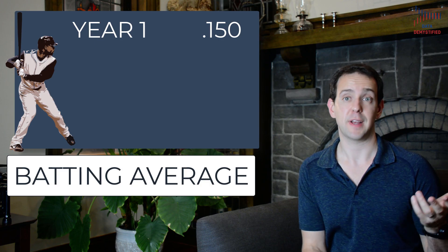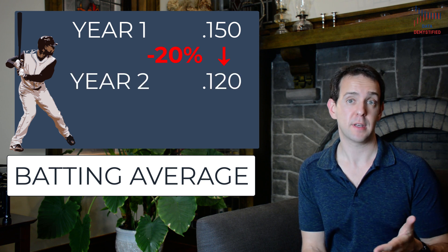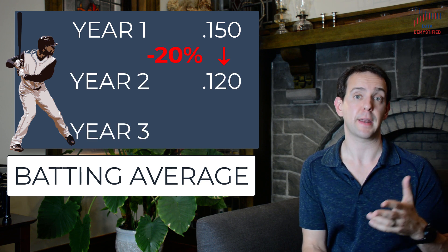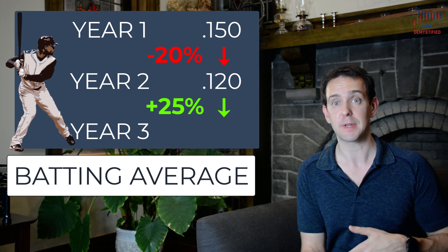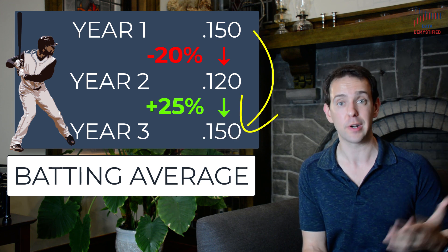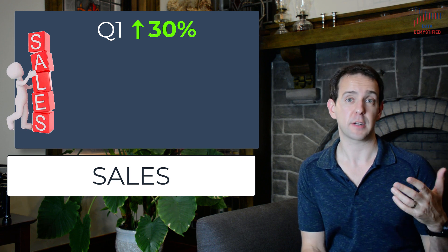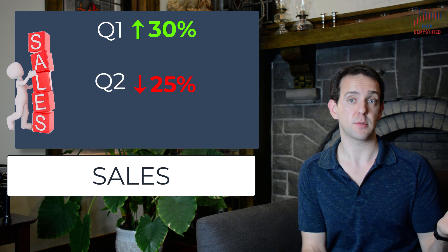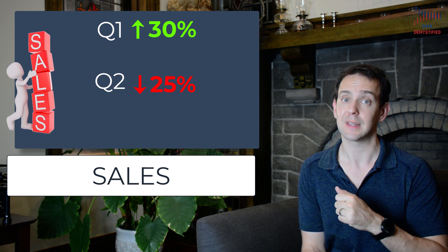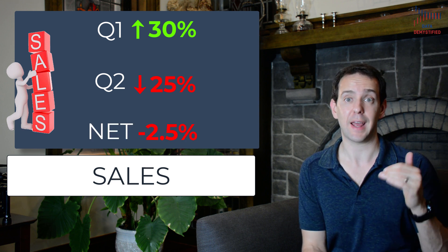We see stacked increases and decreases used incorrectly all the time, and not just with identical increases and decreases. For example, a baseball player has a bad season and his batting average goes down by 20%. The next year his batting average goes up by 25% — he must be on fire. Actually, no, he's exactly where he started. Or imagine sales were up 30% in Q1 but down only 25% in Q2 — good thing we're still ahead, except we're not, since sales are actually down two and a half percentage points overall. These types of errors in reasoning are everywhere, and we need to be careful to avoid such incorrect conclusions.